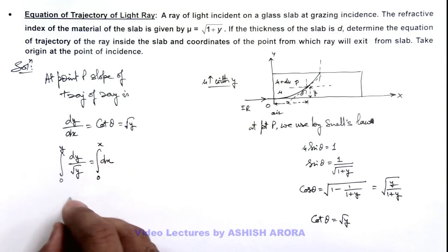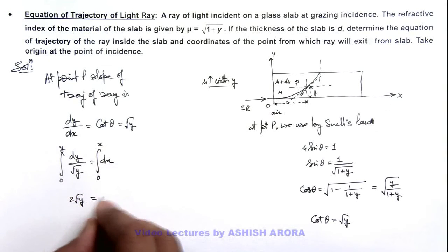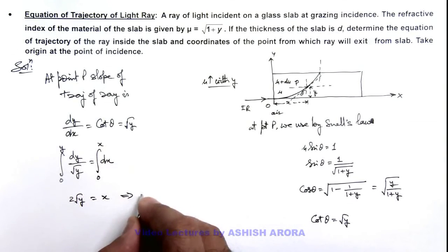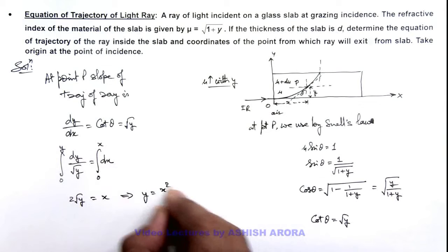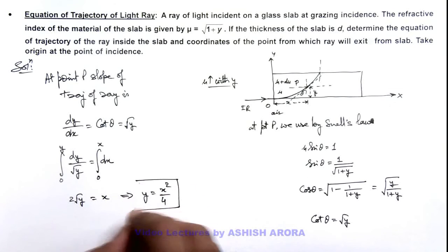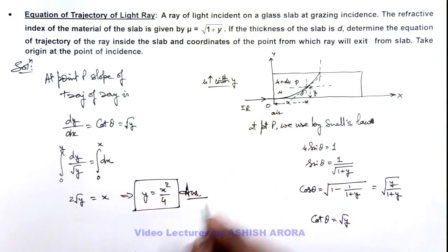So here it can be written as 2√y = x, or this says y = x²/4. That is our equation of trajectory in this case, that is the result of this problem.